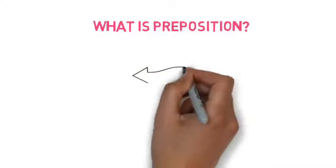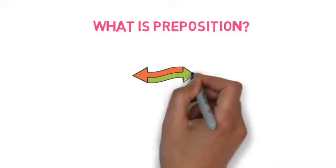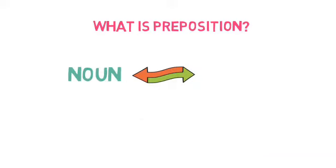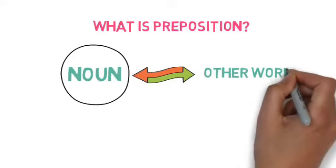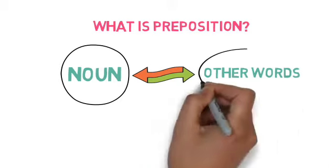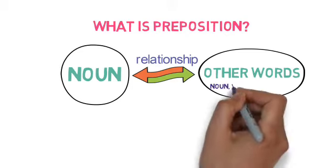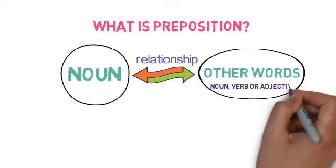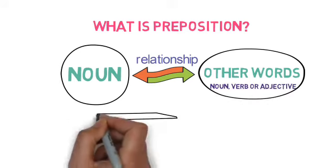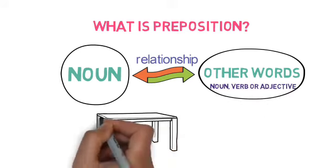So what is preposition? A preposition is a word that makes connection of a noun or a pronoun with the other words in a sentence — that means it shows the relationship. The other words here means noun, verb, or adjective.